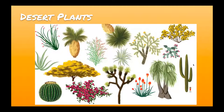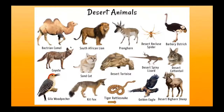Desert plants have adapted to retain as much water as possible. Unlike rainforest plants that grow large leaves to compete for limited sunlight, desert plants don't need as large leaves because they receive so much sun. Cacti, for example, have tiny needle-like leaves with small, closed pores to retain as much water as possible. Desert animals are also well adapted to those extreme conditions.